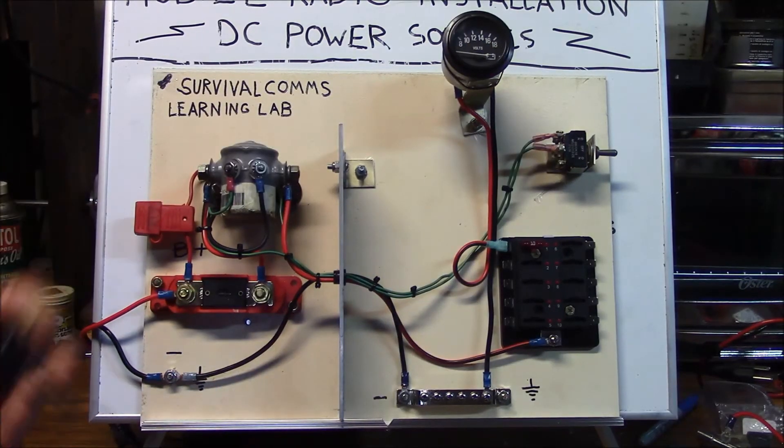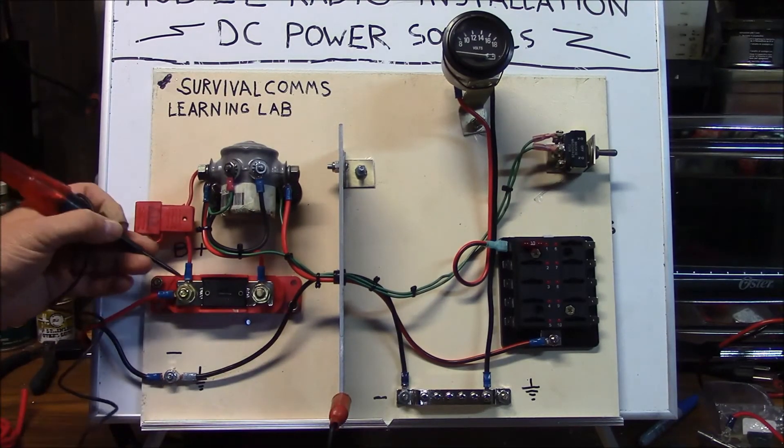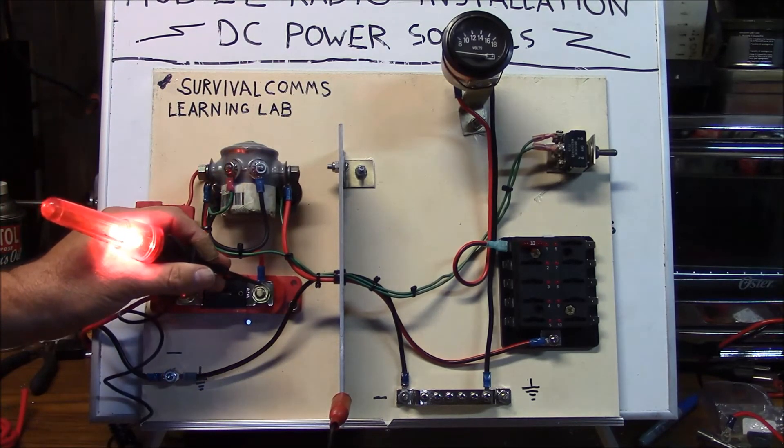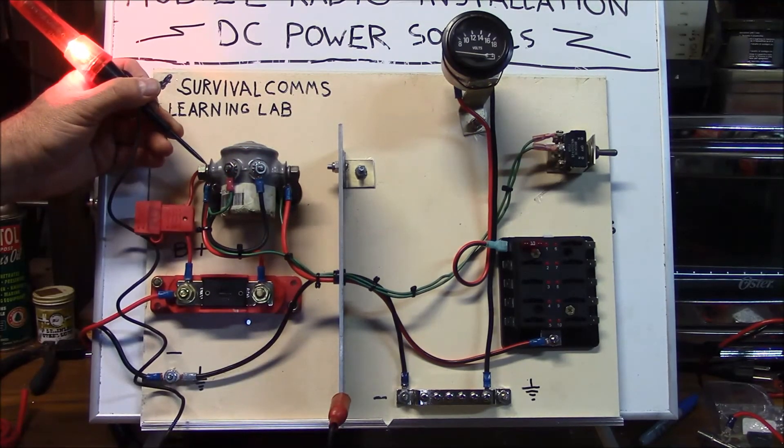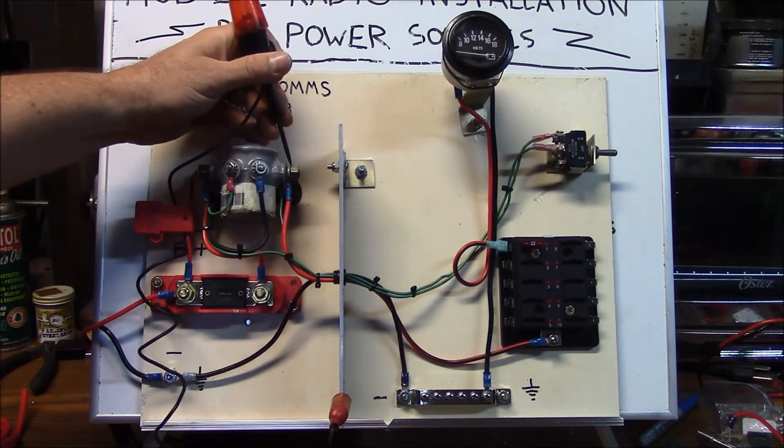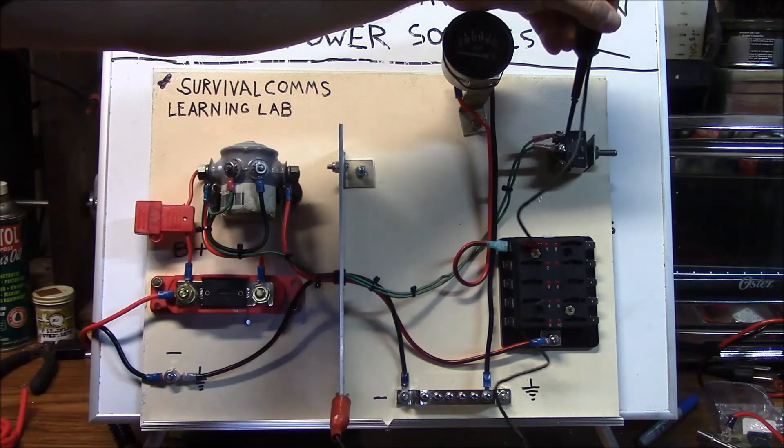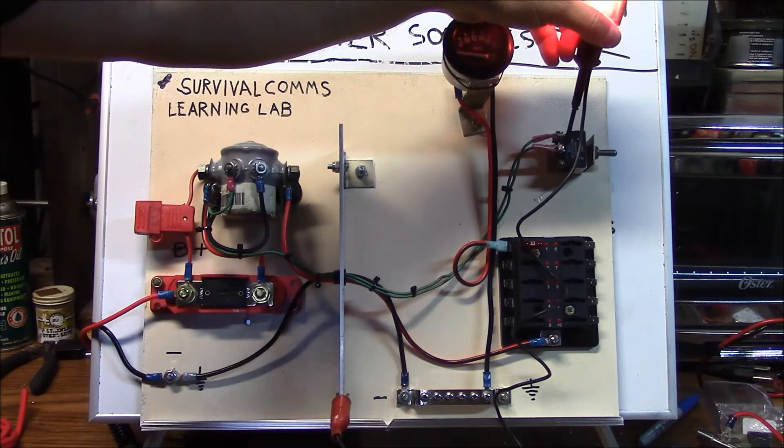For the benefit of those who may not have seen a setup like this before, we'll go ahead and demonstrate with the test light here. You can see that we have power on our source side of our master fuse. We have power on the load side of our master fuse. We have power on the source side of our master relay. We have no power on the load side of our master relay. We do have power at our feed side of our switch.